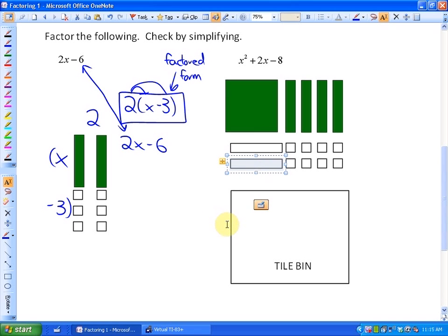So our factors here in this particular case are x plus 4 and x minus 2. Or in other words, x plus 4 times x minus 2. And we could check that. That's our factored form.